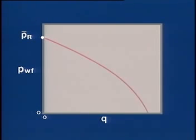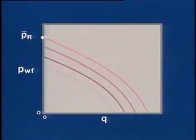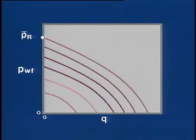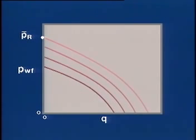Because the reservoir pressure usually decreases as more fluids are produced, the IPR over the life of a well will shrink toward the origin. This family of curves then shows how a well's potential to produce at any given bottom hole pressure decreases with declining reservoir pressure.